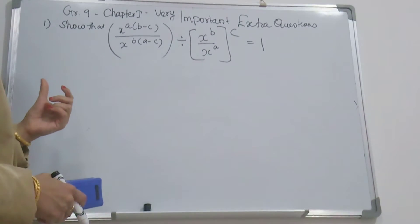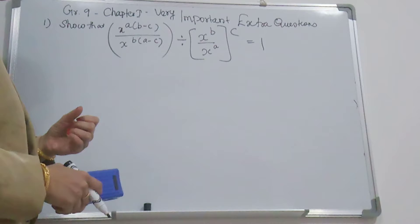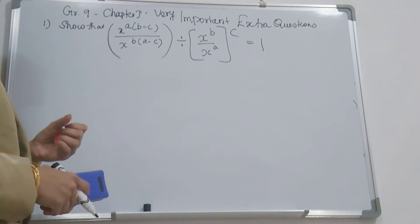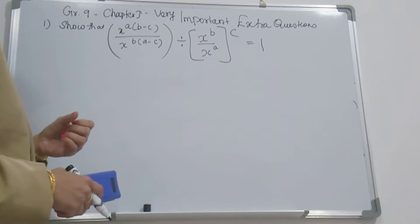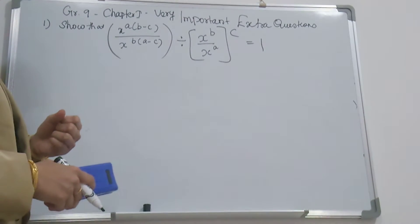Show that x^(a(b-c)) divided by x^(b(a-c)), divided by x^(bc) divided by x^(ac), equals 1. That you have to show.